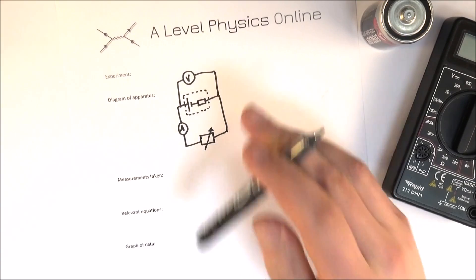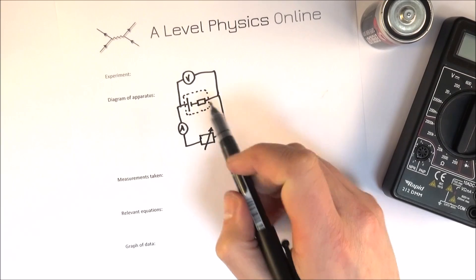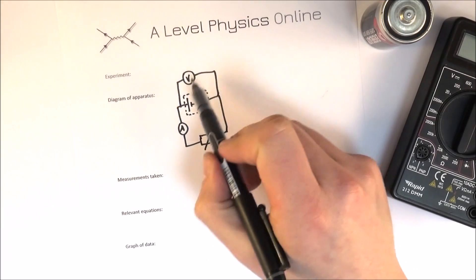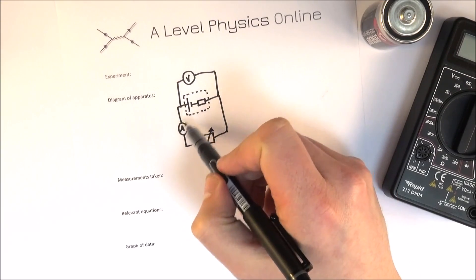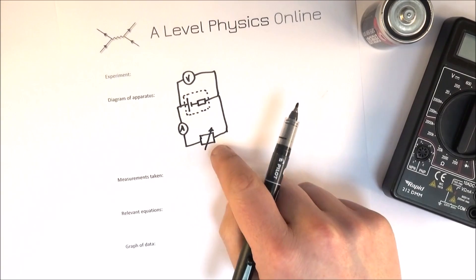Now it doesn't have to be perfect but it has to show the main things. So here I've got my cell with its internal resistance here. I've got a voltmeter across it to measure the terminal PD, an ammeter in the circuit and I've got a variable resistor. So for me that's all I need to remember.